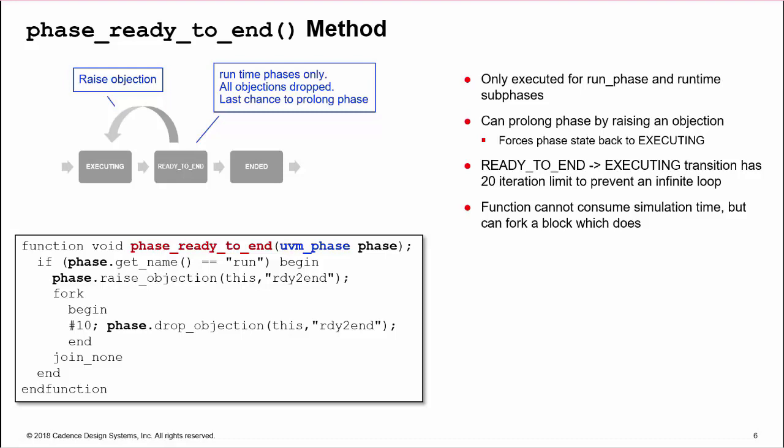One problem is that ready_to_end is a function and cannot consume time. It can raise an objection, but without a subsequent drop, the phase will never end. A work-around is to use a fork join_none to spawn a thread, which can consume time, and then drop an objection in the future, forcing the phase state back to ready_to_end. So we can prolong the run_phase or run sub-phase to, for example, allow data propagation through a DUT.